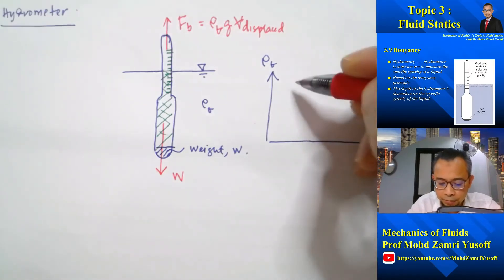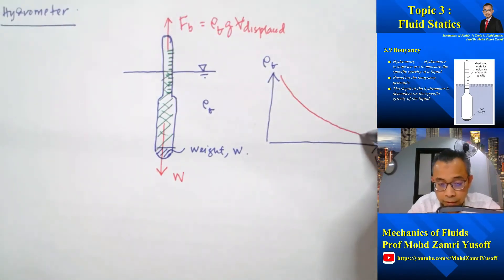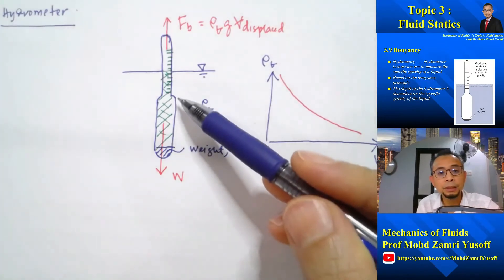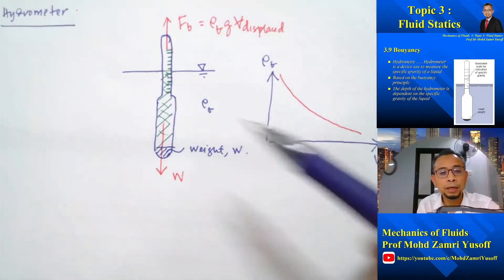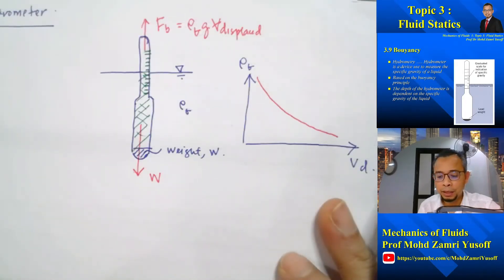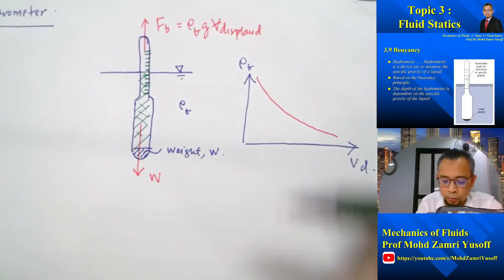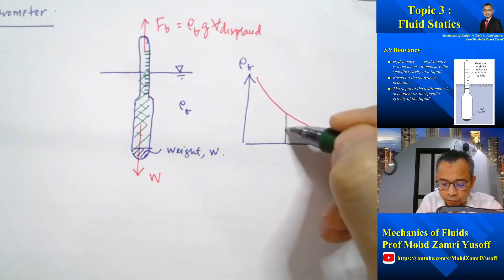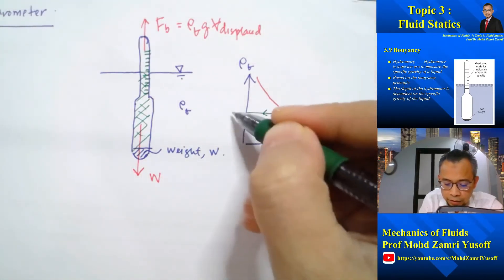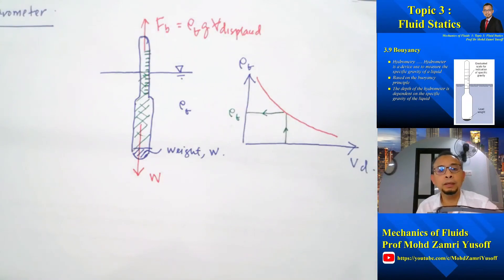Once we have obtained this calibration chart, we can use the hydrometer by placing it in any liquid whose density we want to measure. From the displaced volume reading, we can directly obtain the density of the liquid using the chart.